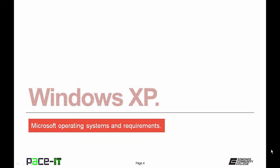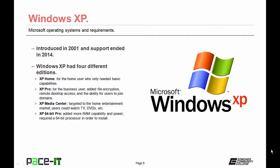We're going to begin with Windows XP, introduced in 2001 — support for it ended in April 2014, so it's end of life. Windows XP had four editions: XP Home for the home user with basic capabilities; XP Professional for business users, adding file encryption, remote desktop access, and domain joining; XP Media Center, targeted to home entertainment so users could watch television, DVDs, and listen to music.